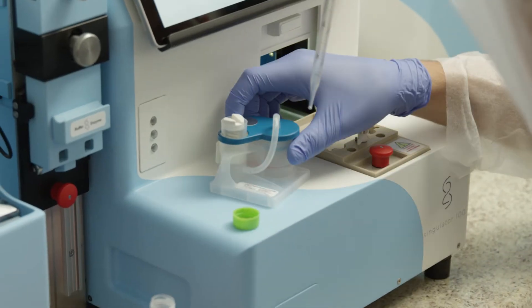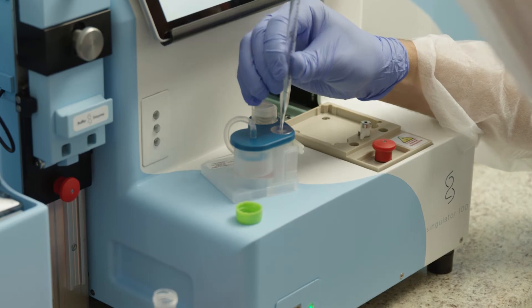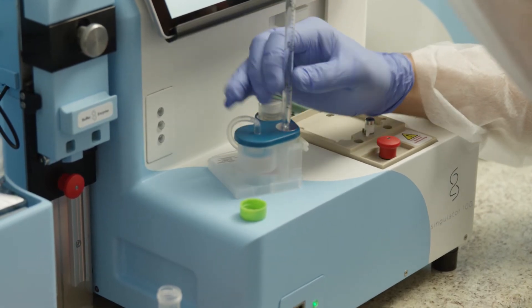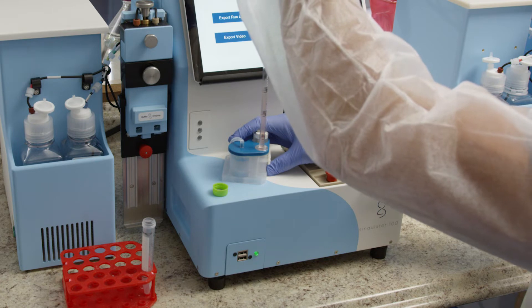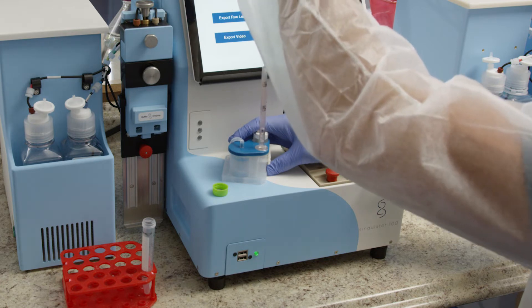Place the cartridge on a flat surface. Puncture the foil seal with a 1 milliliter or serological pipette and transfer the nuclei suspension to a 15 milliliter conical tube for centrifugation.